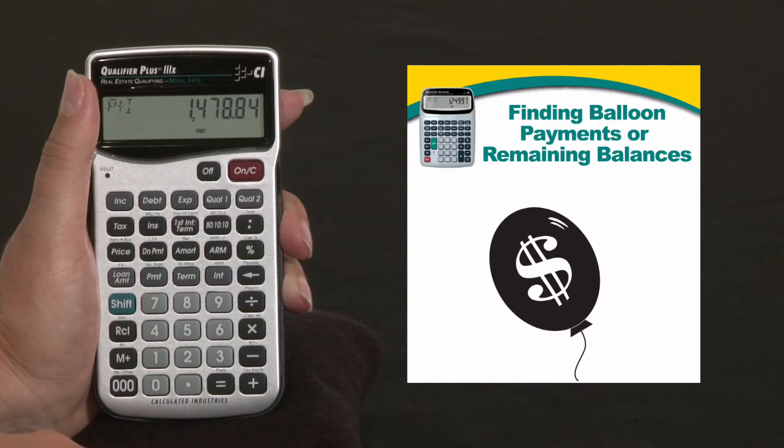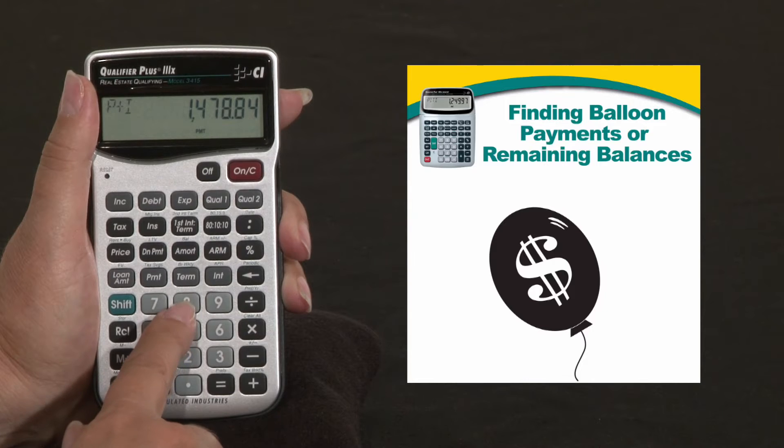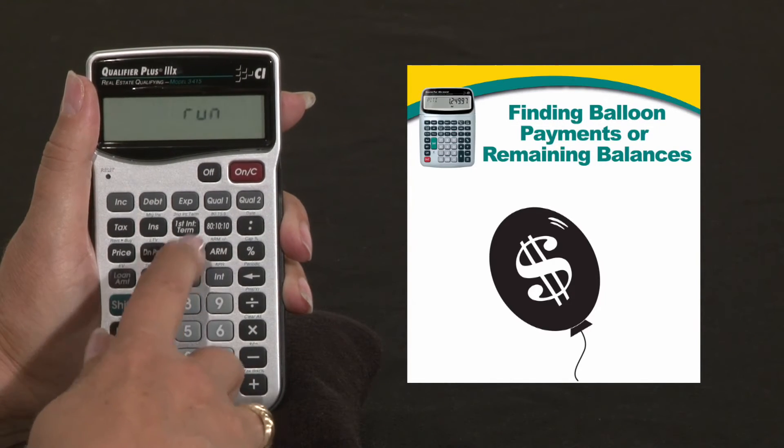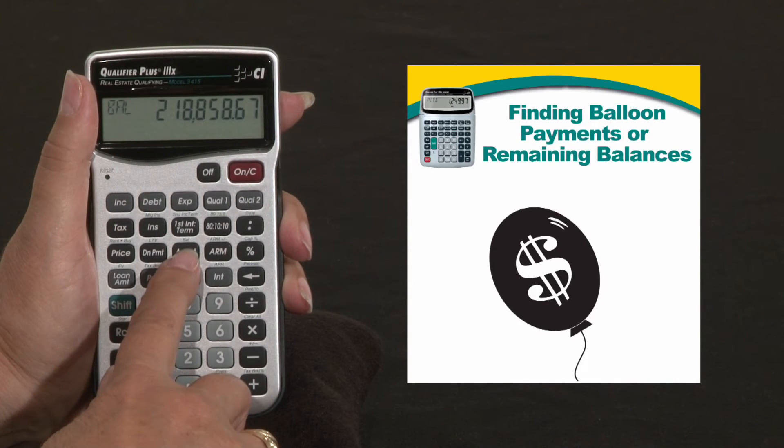Now, we want to know what that balance is at the end of 8 years. So all I have to do is press 8, shift, amort. And what that did was it gave me the balance at the end of 8 years.